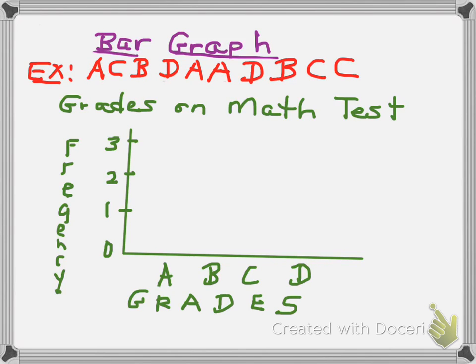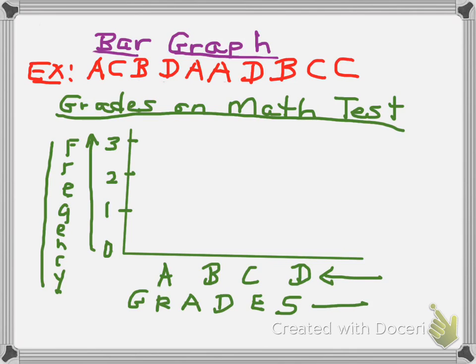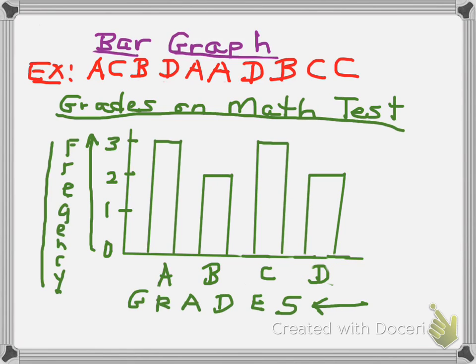So for our bar graph for this particular data, we need a title, which is grades on a math test. We also need a scale on the vertical side, which is from 0 up to 3. And we need to label that as well, and we labeled that frequency. We need to do the same thing on the horizontal scale. List out all the grades, A, B, C, D, and then also have a title or a label for that horizontal axis. To complete the bar graph, we just fill in bars, representing the height of the frequency of each of the grades, A, B, C, and D.